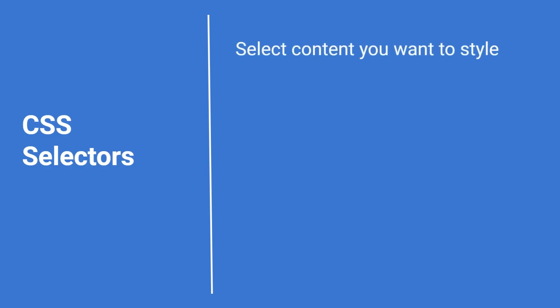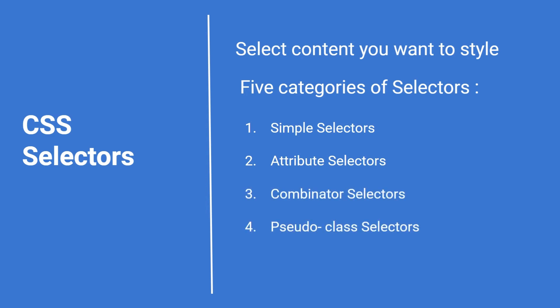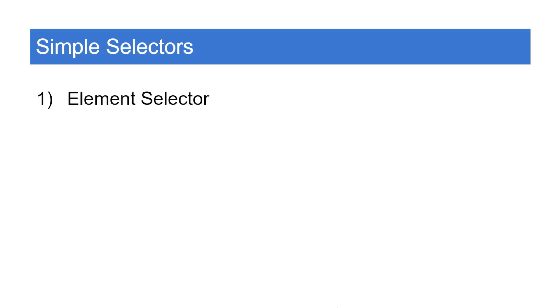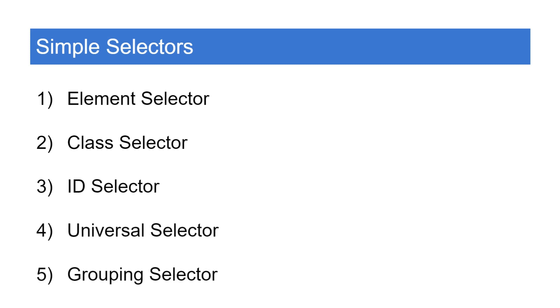Let's explore CSS selectors. Selectors select the content you want to style. There are five categories of selectors: simple selectors, attribute selectors, combinator selectors, pseudo-class selectors, and pseudo-element selectors. Let's see each one by one. Inside simple selectors there are five types: element selector, class selector, ID selector, universal selector, and grouping selector.